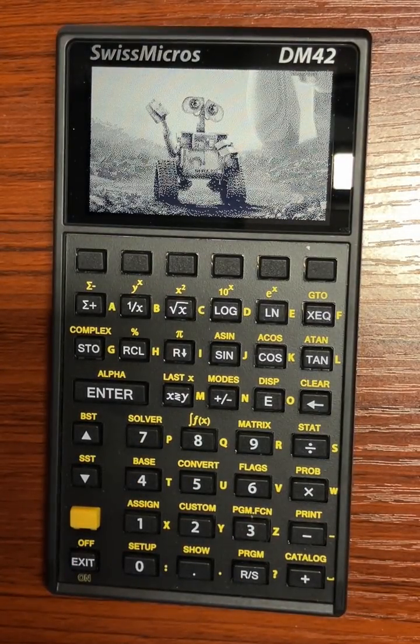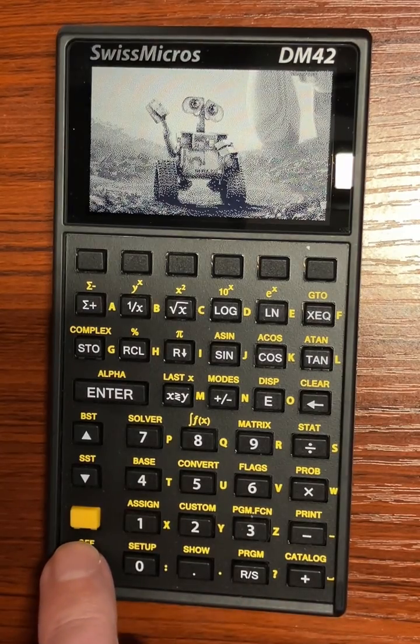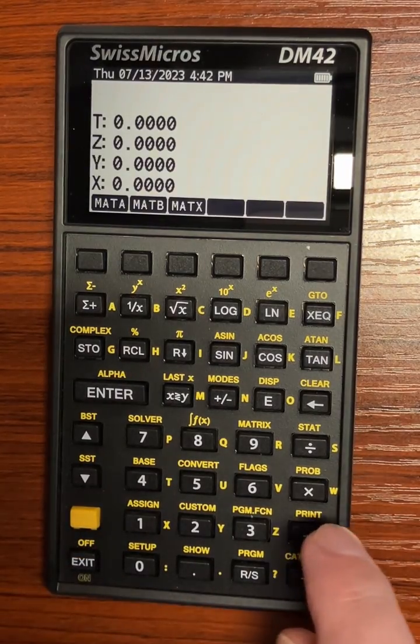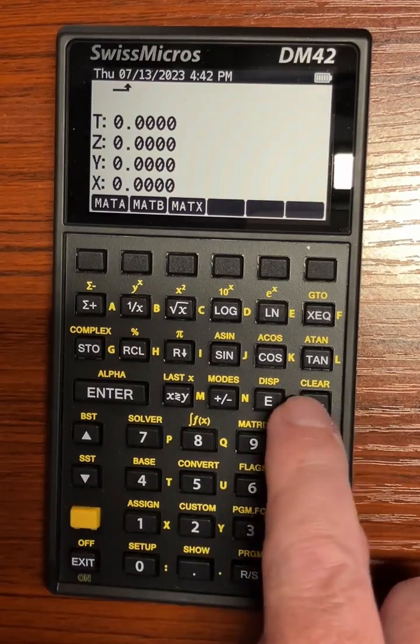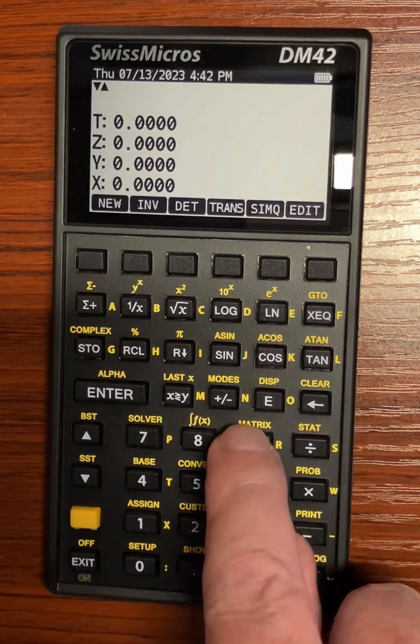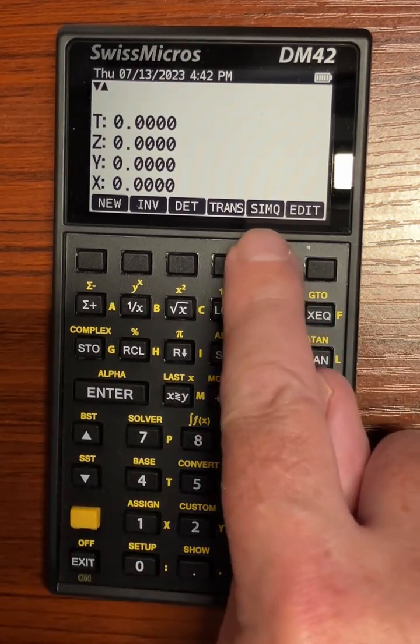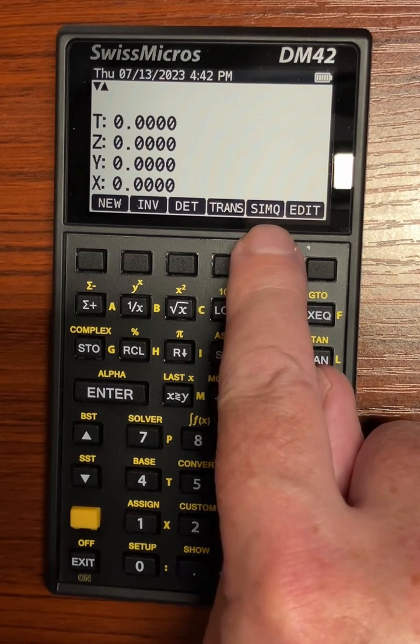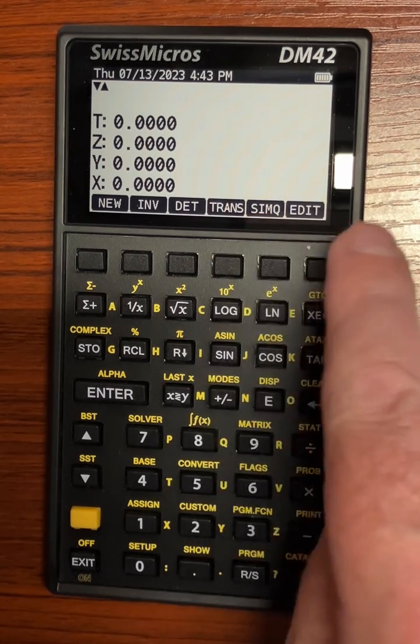The DM42 has a shortcut for doing this. Turn it on, go into matrix mode, and in the submenu there's a SIMQ (simultaneous equation) button.